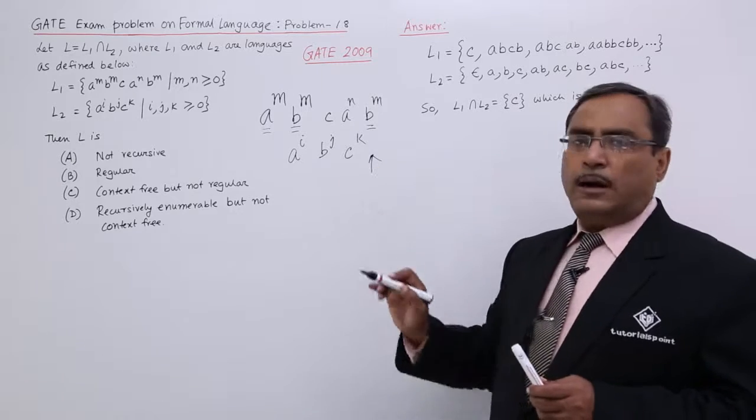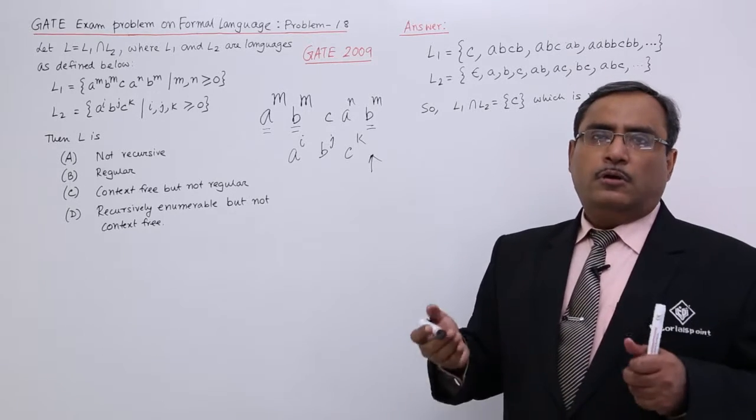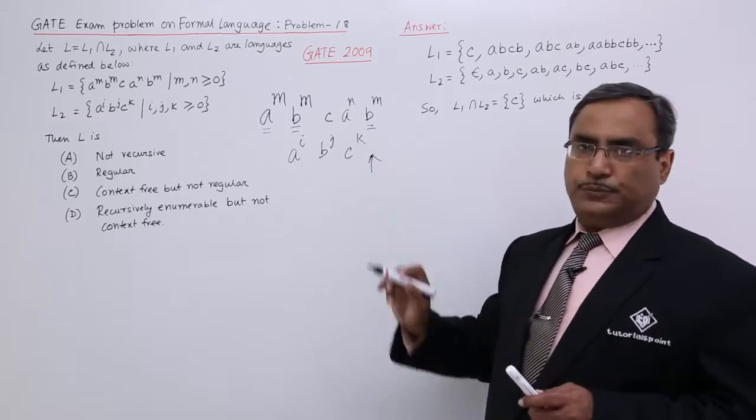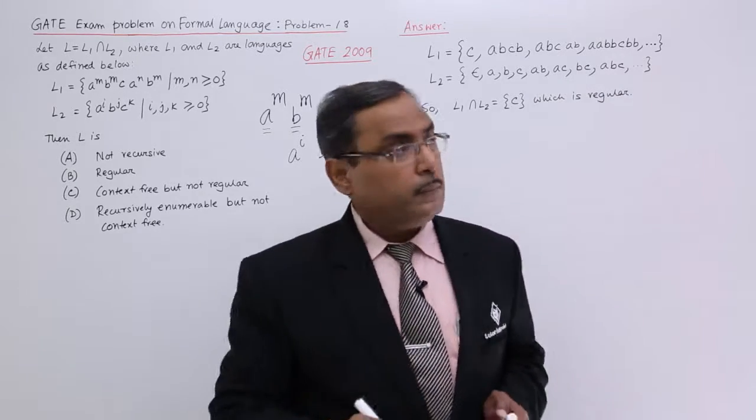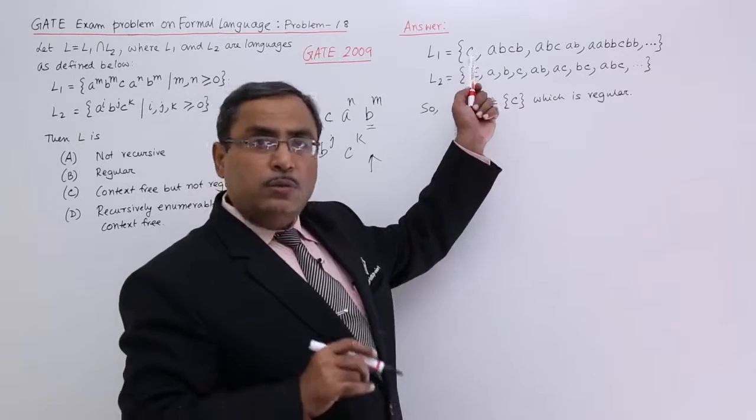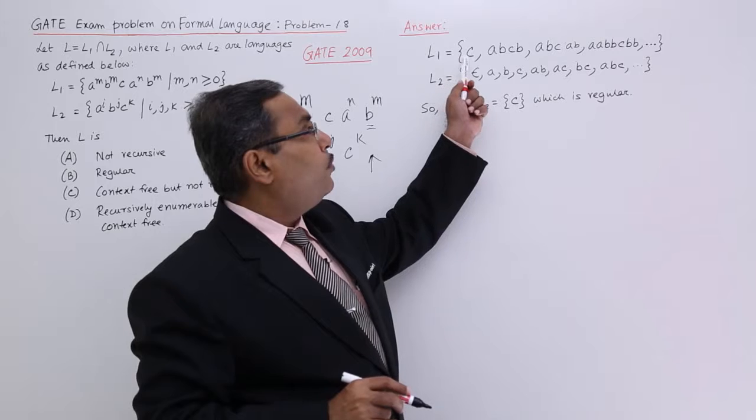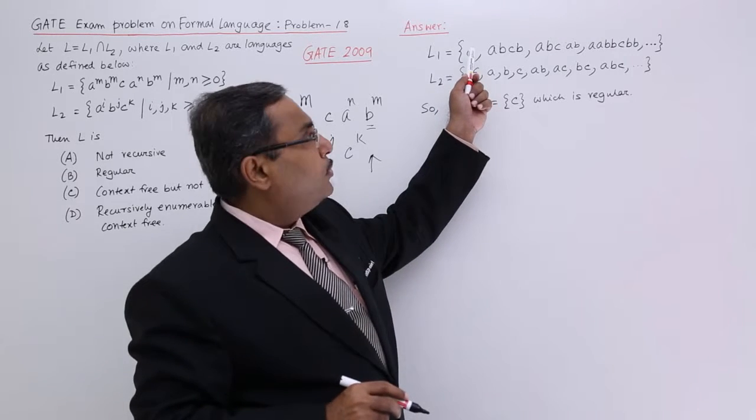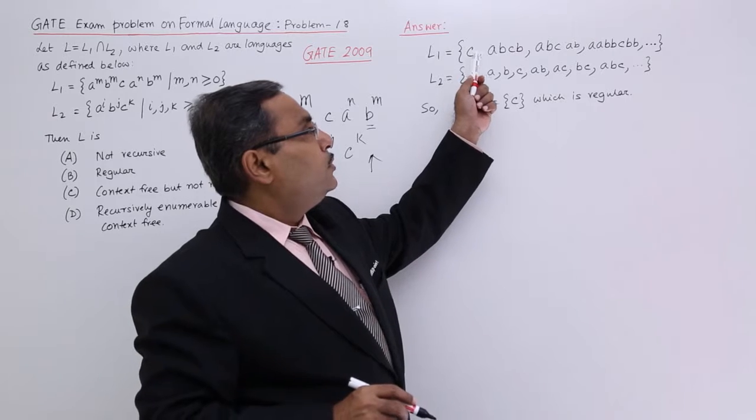So they may or may not come. If they come, they can come once or multiple times. So that is the issue. Now see, the strings which will be generated by L1 include C only - one C, because there is no A, no B. So there will be no B after C, and the A is also not there.